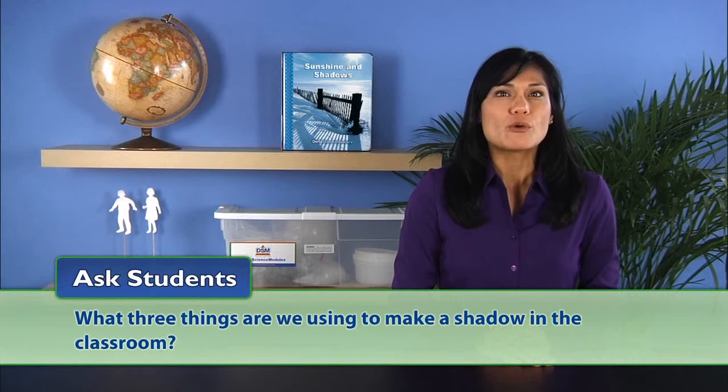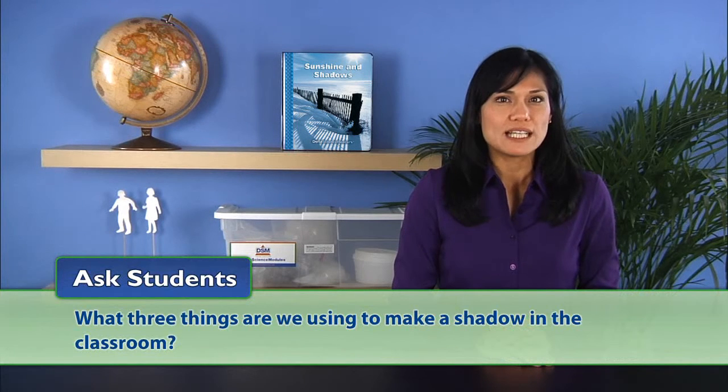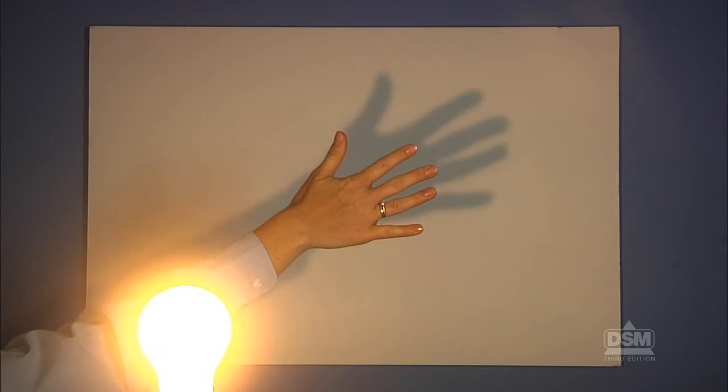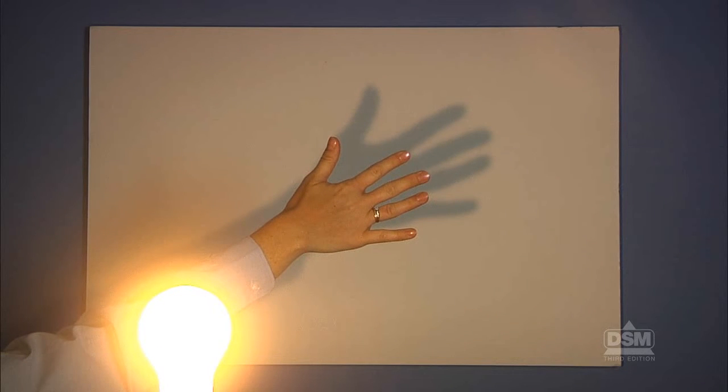Next, ask students, what three things are we using to make a shadow in the classroom? The student should answer that the light source is the lamp, the object to block the light is the hand, and the wall is the surface for the shadow to fall upon.